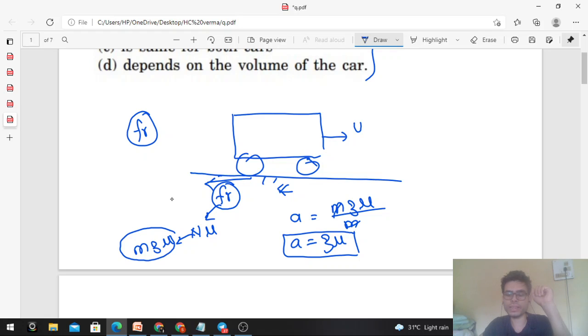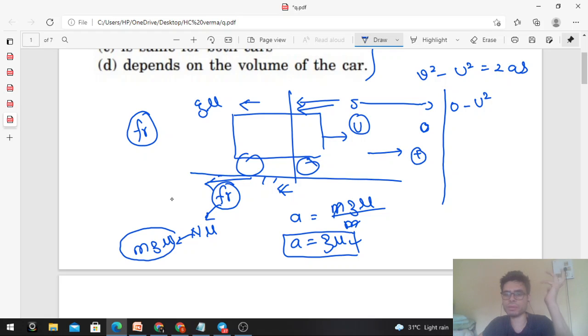So now we can find out the minimum stopping distance. How much distance does it move before coming to rest with this retardation, this acceleration in backward direction g*μ? Initial velocity u, final velocity after moving distance s becomes 0. So v² - u² = 2as. v becomes 0, minus initial velocity u². The forward direction we take as positive, so 2 into a will be minus g*μ and s.